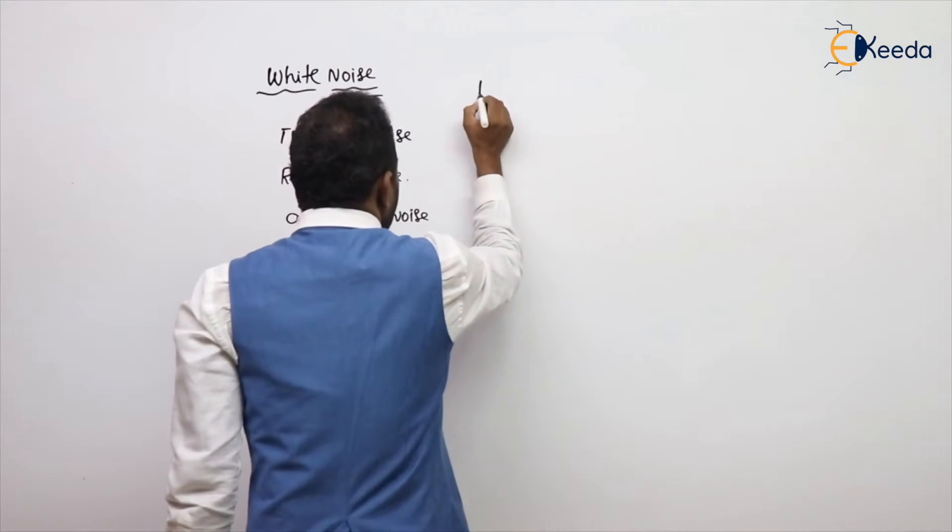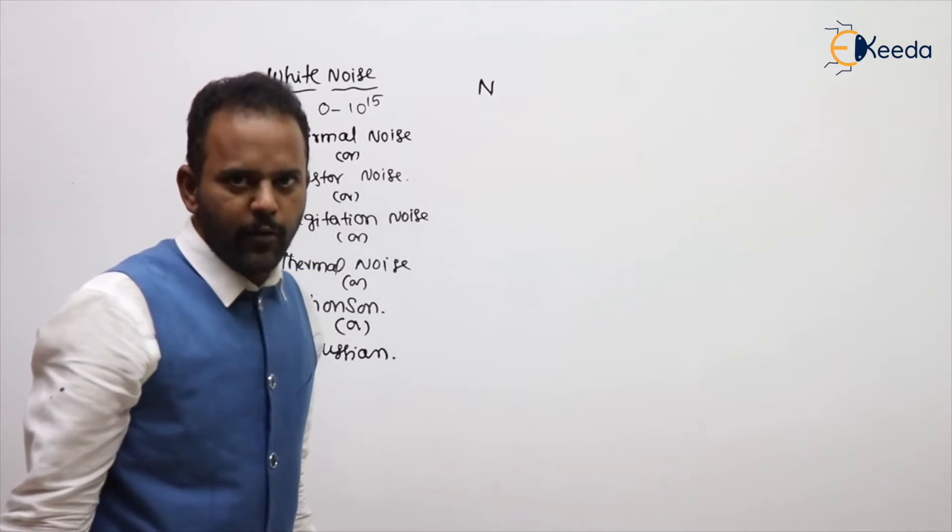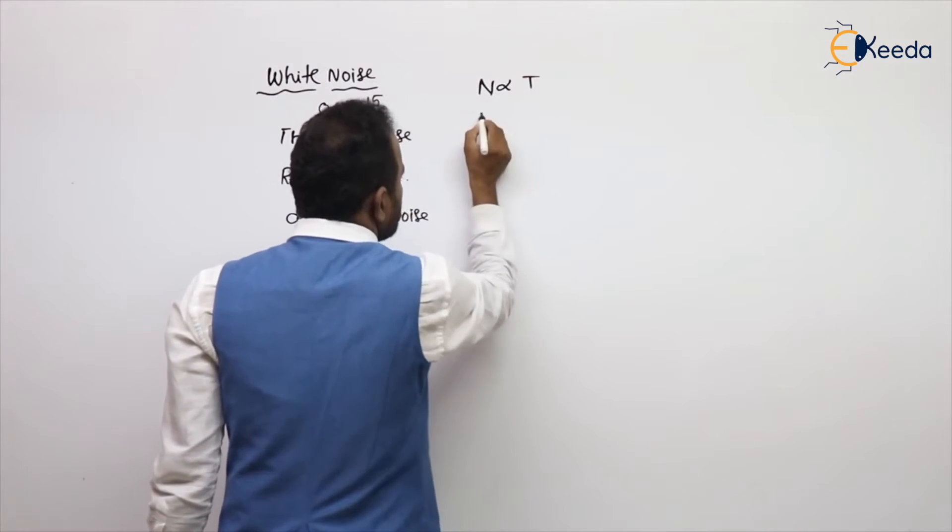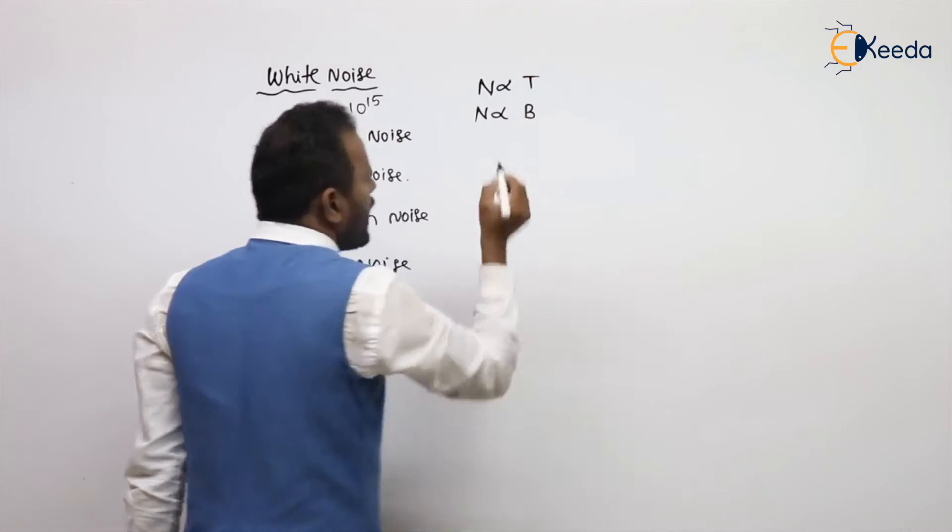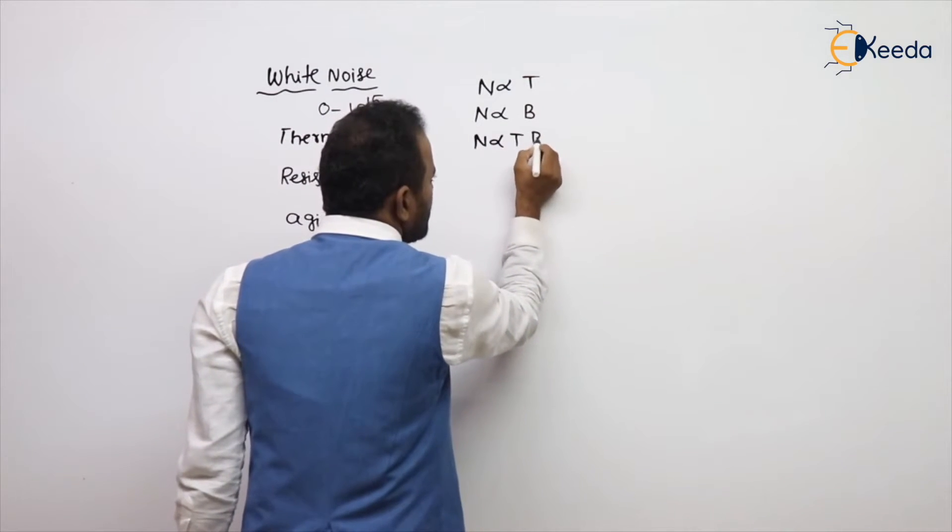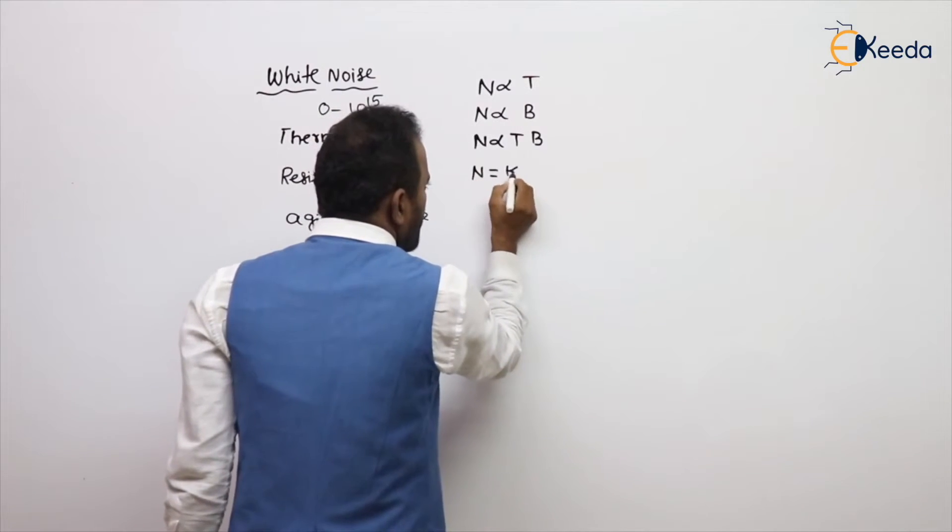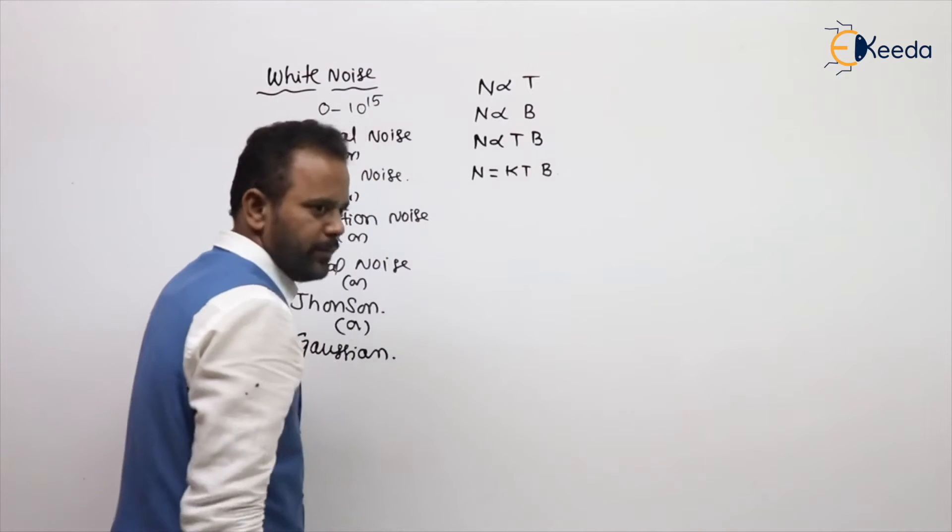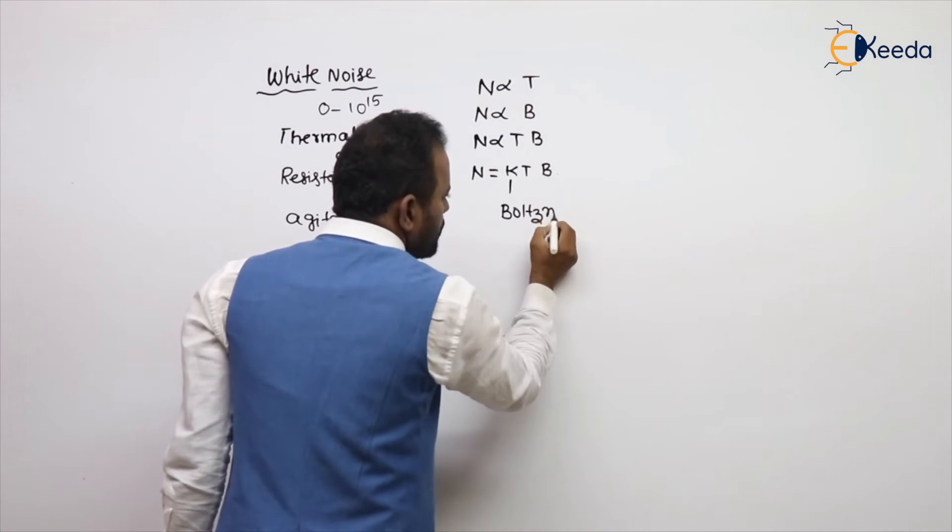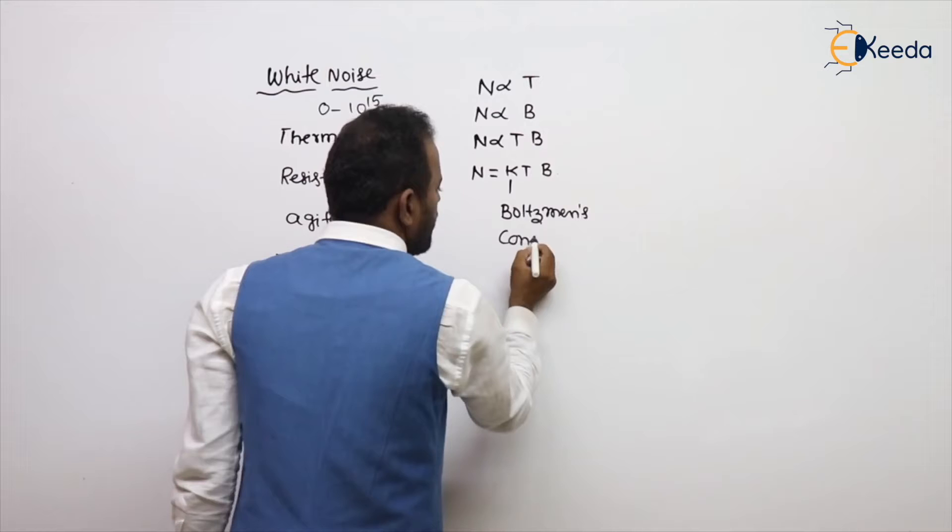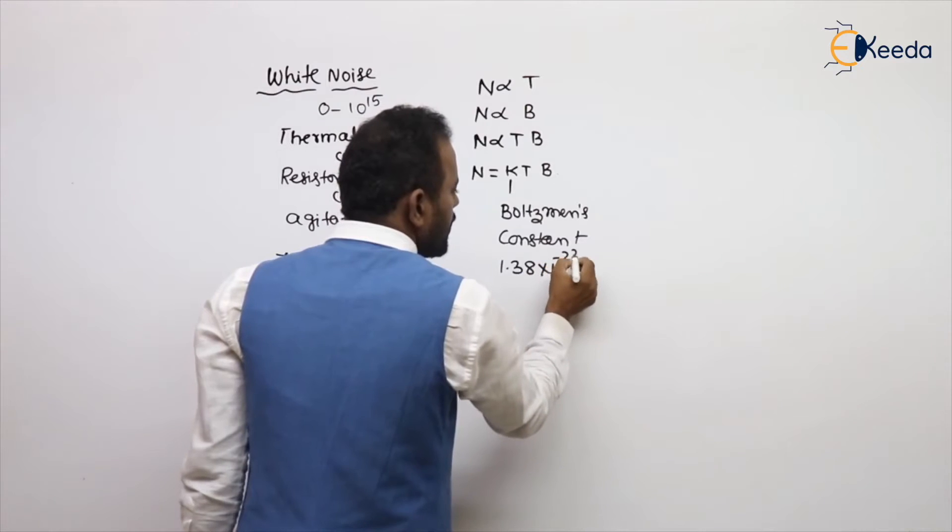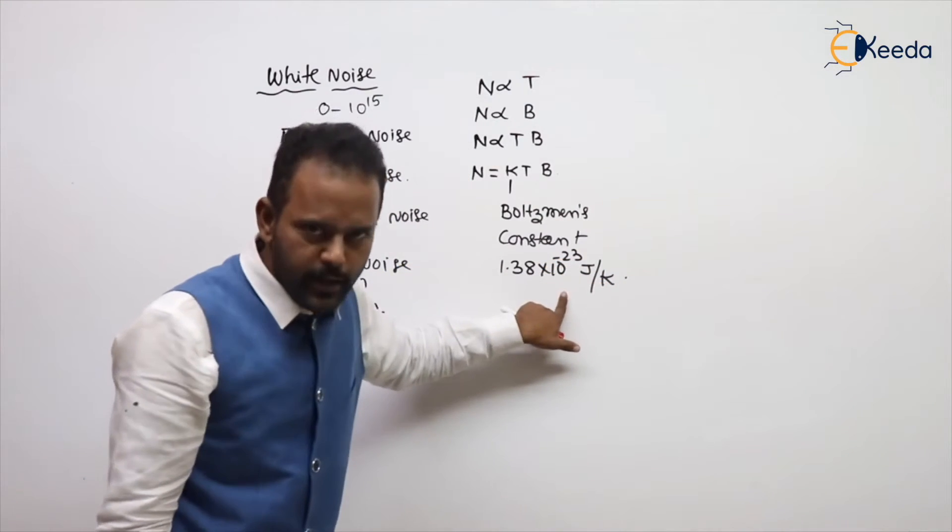The white noise power N is directly proportional to temperature in the device and directly proportional to bandwidth of the system. So white noise power is directly proportional to T into B. To avoid the proportionality, we are taking a constant K, so KTB, where K is called Boltzmann constant. And what is this value? 1.38 into 10 power minus 23 Joule per Kelvin. Please remember.